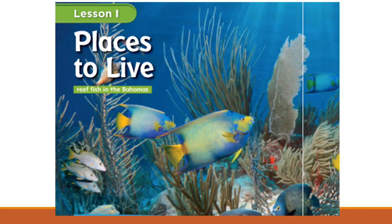Some animals live in the ocean, like fish, whale, octopus, dolphin, and shark. Other animals live on land, in trees, and under the ground. For example, dogs cannot live in the ocean because they cannot breathe underwater.